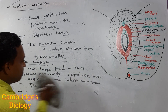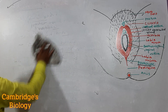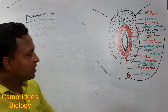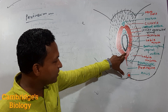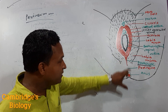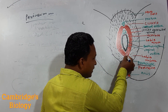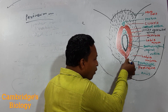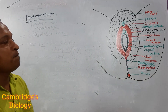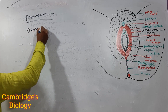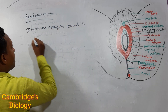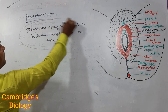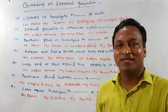Now we talk about the perineum. The region found between the vestibule and the anus is called perineum. It is the region found between vestibule to anus.